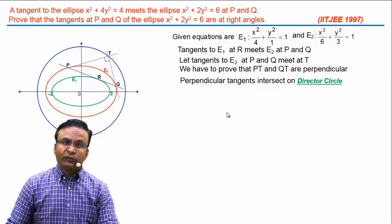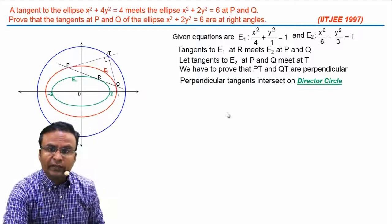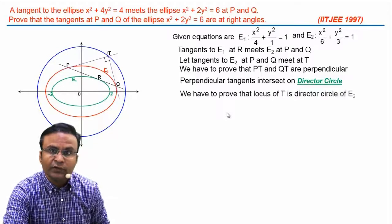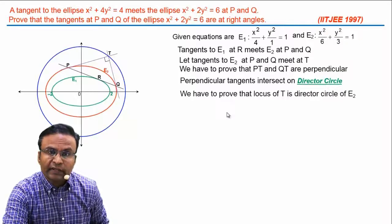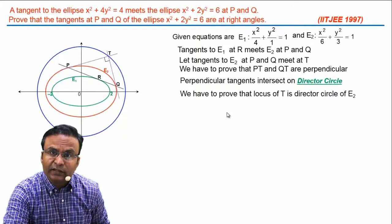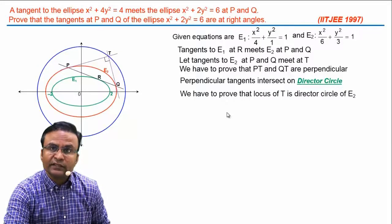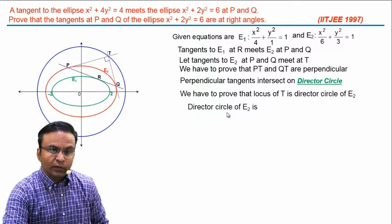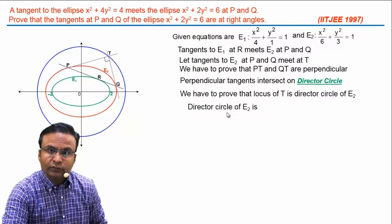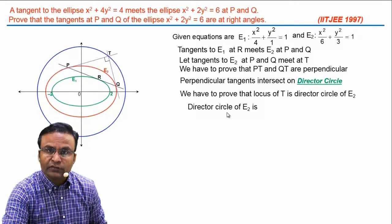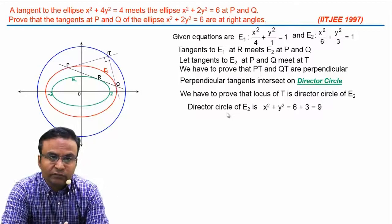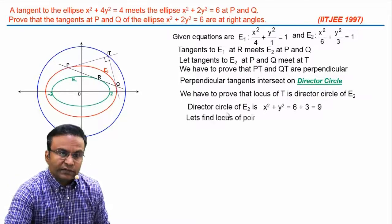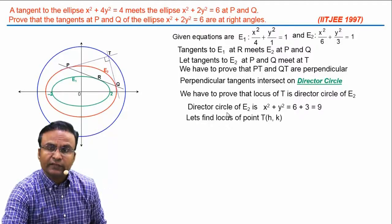To solve this question, we will prove that the locus of point T is the director circle of ellipse E2. If we prove this, then tangents PT and QT are perpendicular. The director circle of any ellipse is x² + y² = a² + b². So for E2, the director circle will be x² + y² = 6 + 3 = 9.